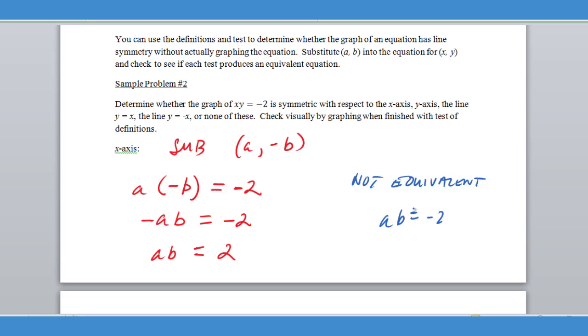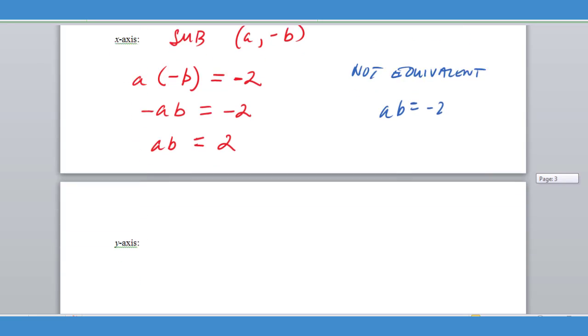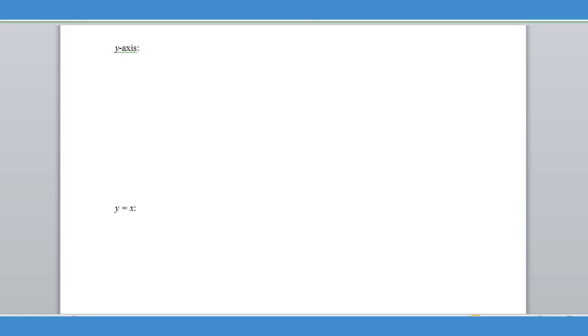Now we're going to test the Y axis. On the Y axis, we're going to substitute negative A and a positive B in place of X and Y. So I'm going to have negative A times B equals negative two, which again gives me negative AB equals negative two and AB equals two again, not equivalent to AB equals negative two. So this is not symmetric along the Y axis.